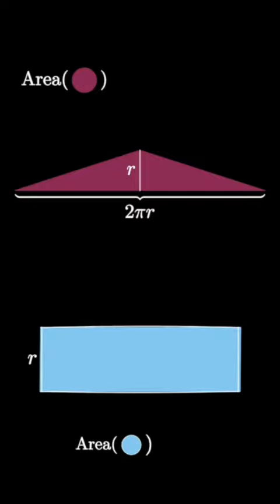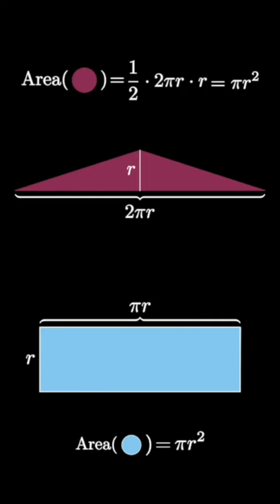So in the top diagram, we get an area of 1/2 times 2πr times r, which is πr². And in the bottom diagram, we get an area of πr². Let me know in the comments which visualization you like better.